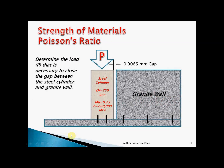Hello, my name is Nazir Khan from the Faculty of Civil Engineering Technology, and I will be demonstrating Poisson's ratio. The problem I'll use to demonstrate Poisson's ratio is: determine the load necessary to close the gap between a steel cylinder and a granite wall. We want to apply a load on the steel cylinder and cause it to expand in the transverse direction to close a gap of 0.0065 mm.